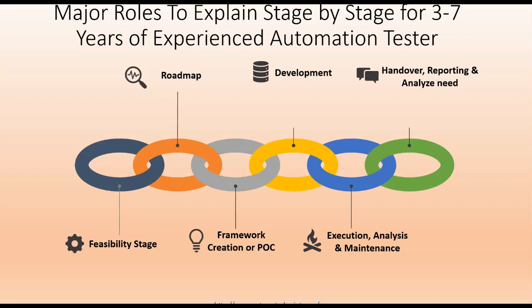The first area is feasibility. In the feasibility phase, I identify the expectations and challenges to perform automation. I identify the current processes and tools involved in my current project or industry. I perform a detailed analysis of the application, review the available documentation, and identify the overall QA maturity of the team. This is your first major phase where you can explain such roles.